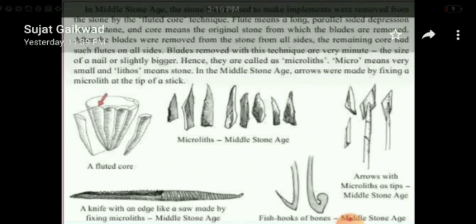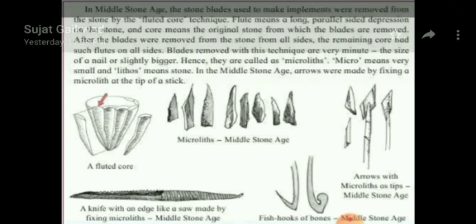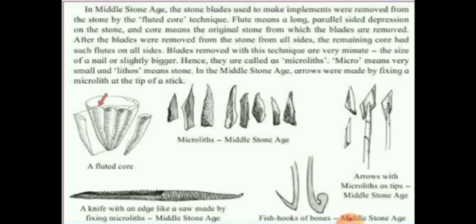In the middle stone age, arrows were made by fixing a microlith at the tip of a stick. Now see the different types of tools and implements: arrows with a microlith at a stick (middle stone age), a knife with an edge like a saw made by fixing microliths (middle stone age), a fluted core, and a fish hook made of bone.